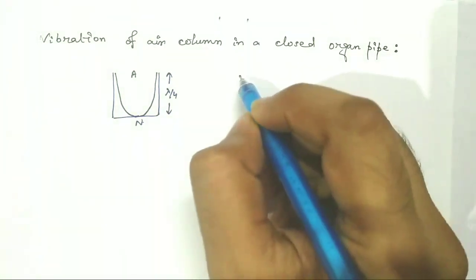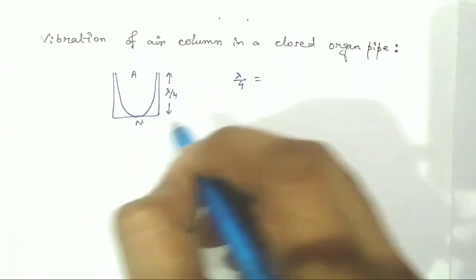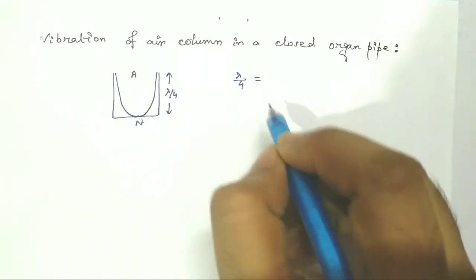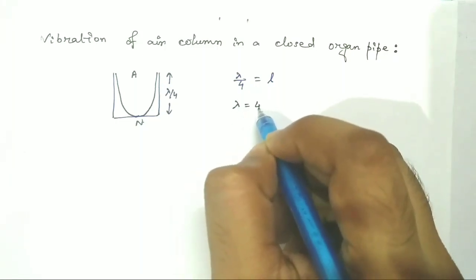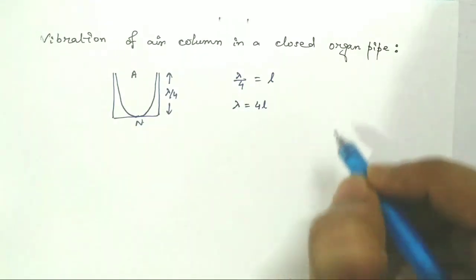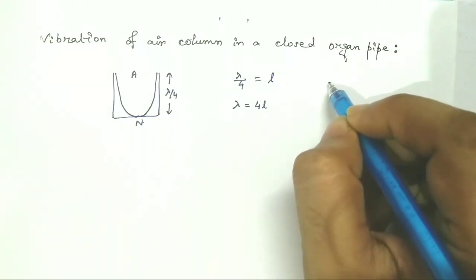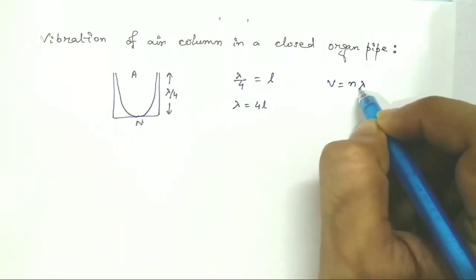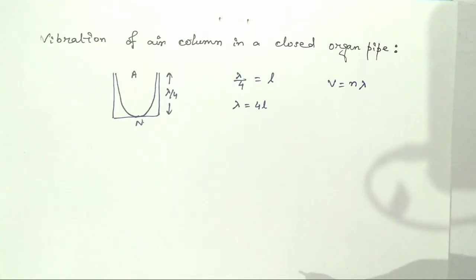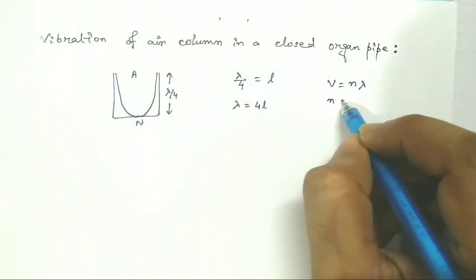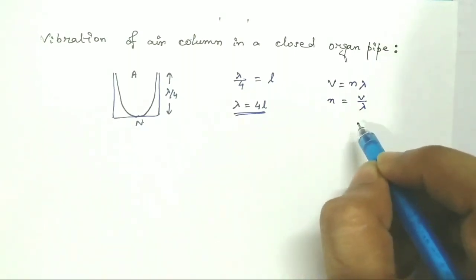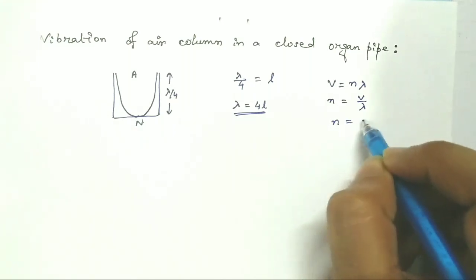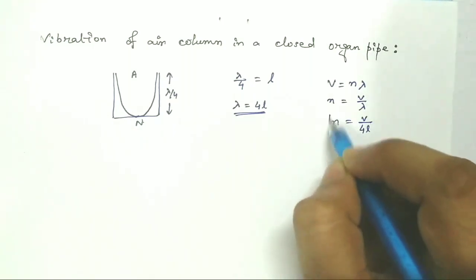This lambda by 4 length will be equal to the total length of the closed organ pipe, that is L. From here we can write lambda equal to 4L. We know the velocity of sound is given by V equal to N lambda, where N is the frequency and lambda is the wavelength. Then we can write N equal to V by lambda, but lambda is equal to 4L. Therefore, N is equal to V by 4L.